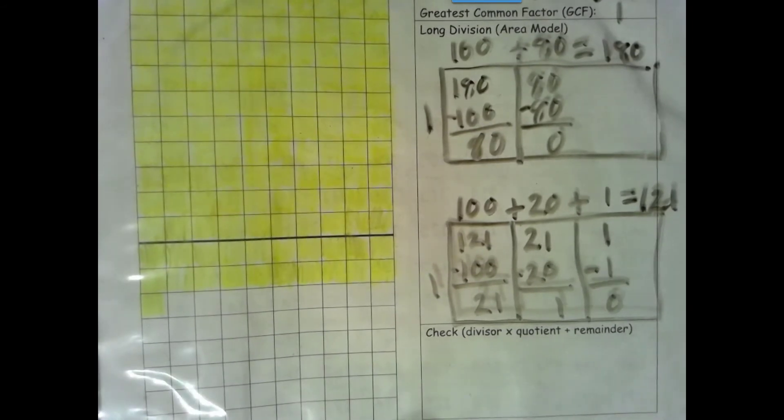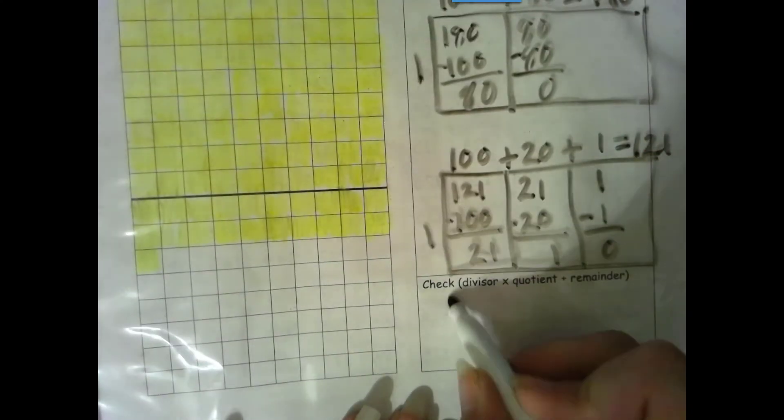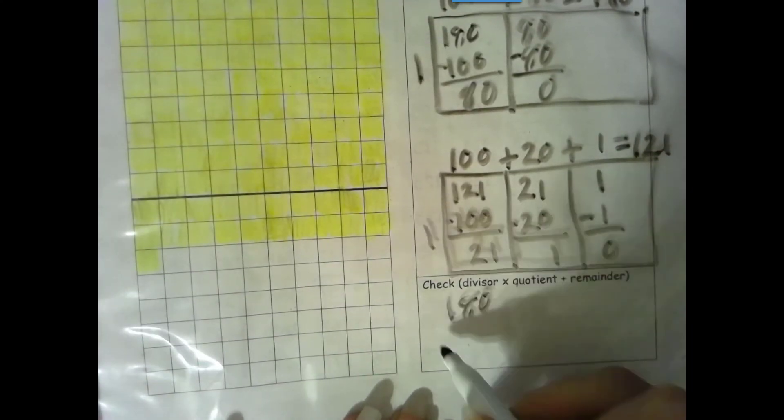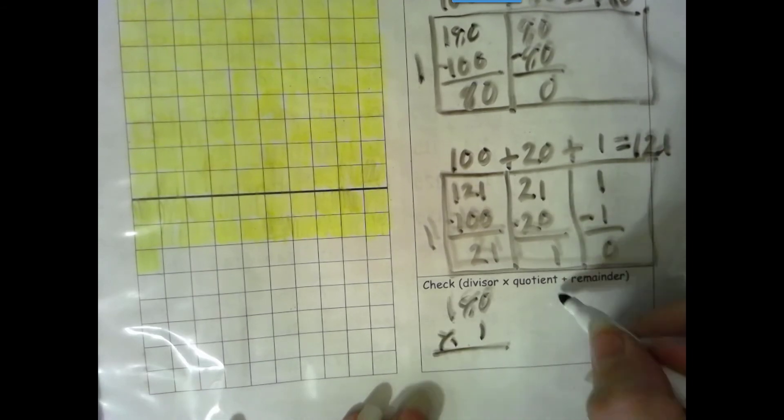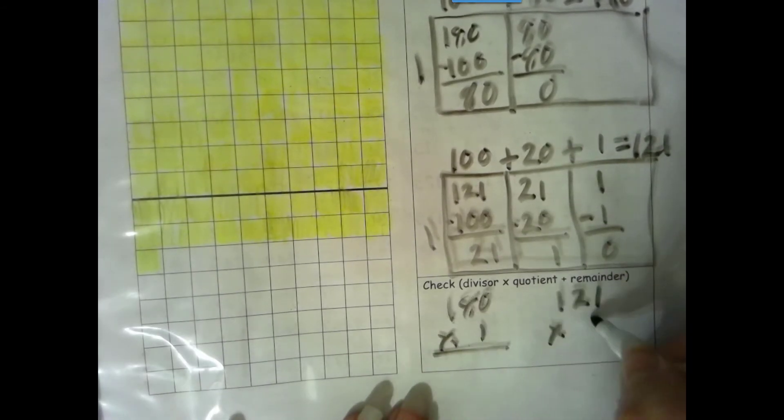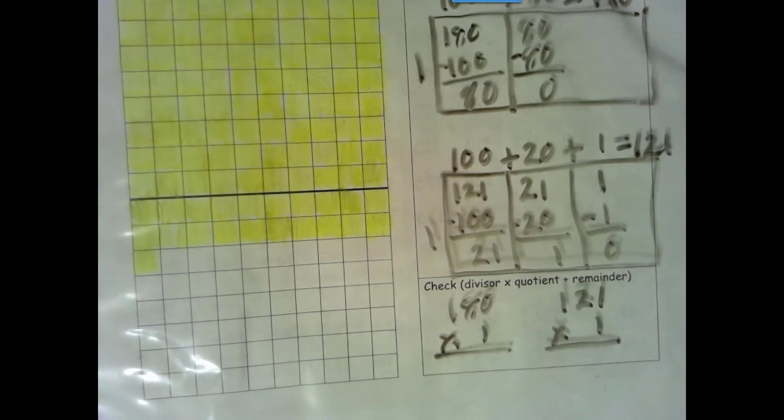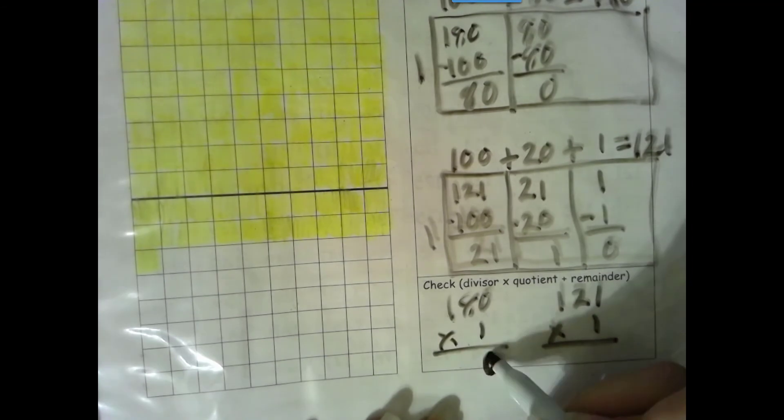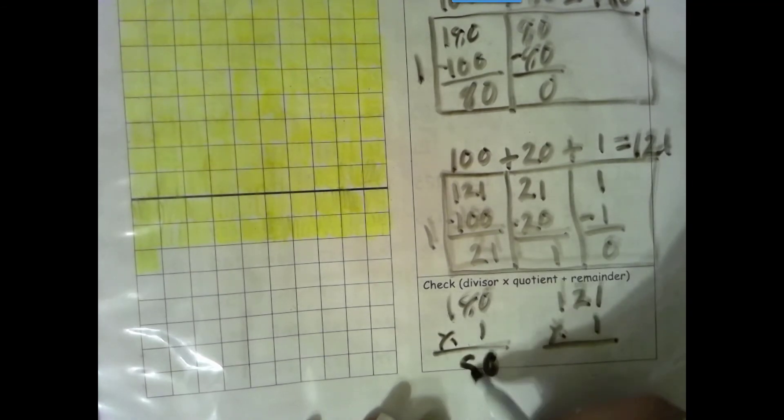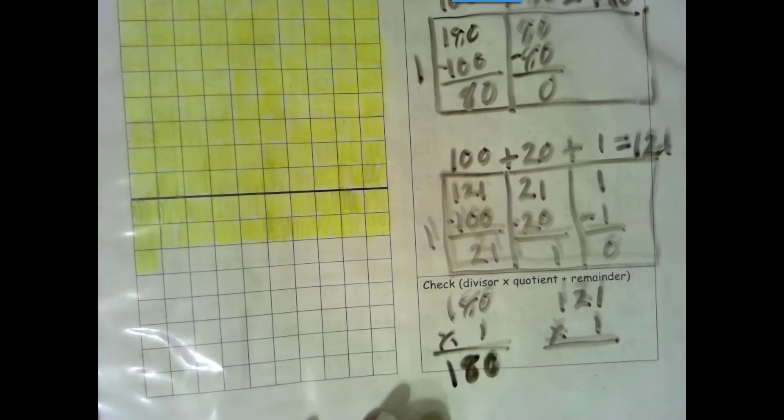Let's go ahead and check our answer. Divisor times quotient plus remainder. Since our remainder is 0 for both, our identity property of addition says when you add 0, it stays the same. But what we end up with here is the identity property of multiplication that says when you multiply by 1, it stays the same. One group of 0 is 0. One group of 8 tens is 8 tens. One group of 100 is 100. One group of 1 is 1. One group of 2 tens is 2 tens. One group of 100 is 100.